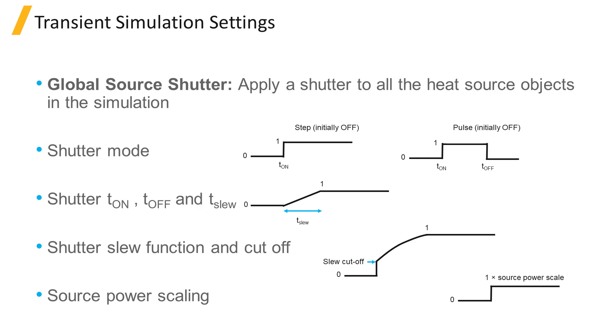Shutter slew cutoff is available when the shutter uses the logarithmic function. The change in source power will be exponential for this cutoff value to 1 for turning on, and from 1 to this value for turning off. The change from 0 to the slew cutoff value and back is abrupt.